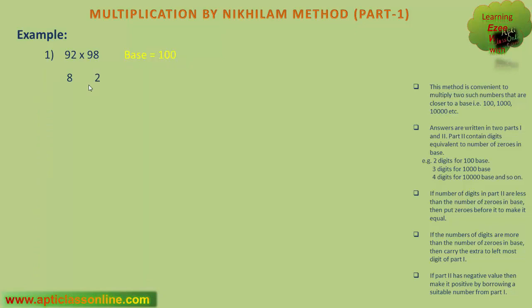Once we do this, we can directly write down the answer. The final answer will have two parts. In the first part, we will write down the difference of 92 and 2, or the difference of 98 and 8. In either case, the difference will be 90. This is the first part. Now comes the second part, which has to be written in continuation of the first part. In the second part, we will write down the multiplication of these two, that is 8 multiplied by 2, that is 16.